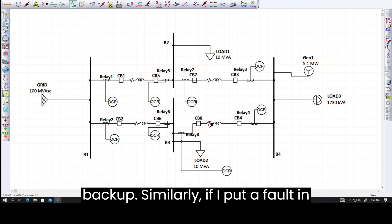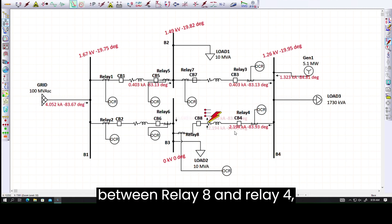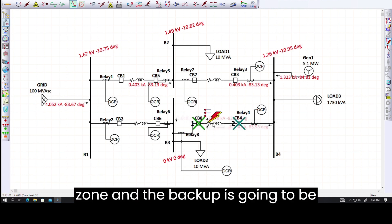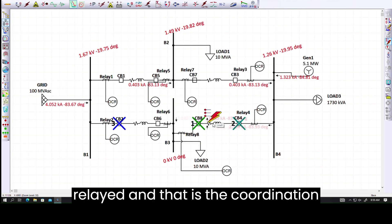Similarly, if I put a fault in between relay 8 and relay 4, relay 8 is going to be the first to trip, and relay 4, isolating the fault in this zone. And the backup is going to be relay 2.